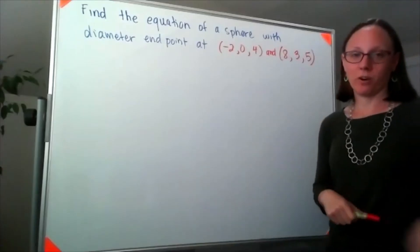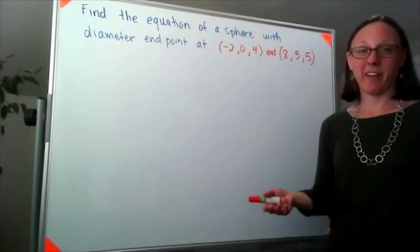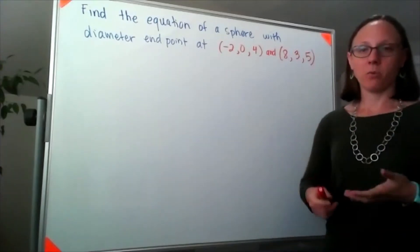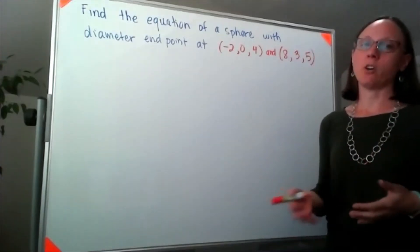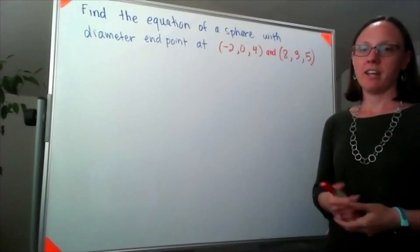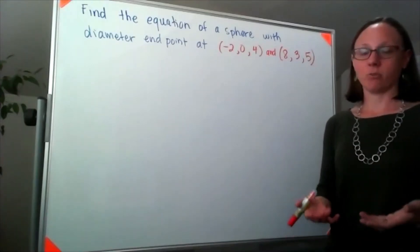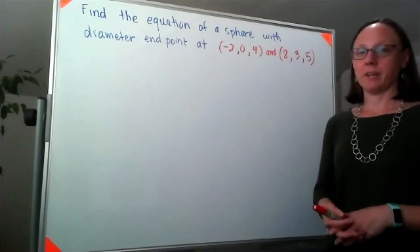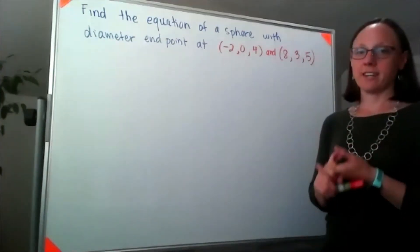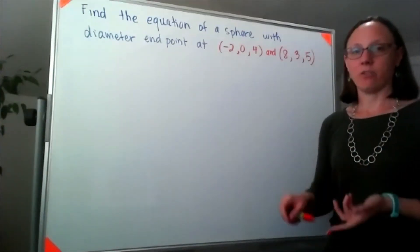I have no idea if the numbers will work out nicely. I'm not too worried about that. So in general, if I'm going to write the equation of a sphere, it's very similar to starting to write the equation of a circle, meaning the two things that I need are the center and the radius.